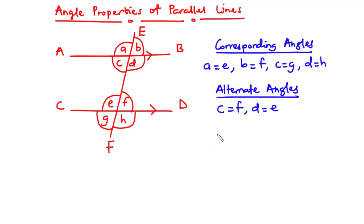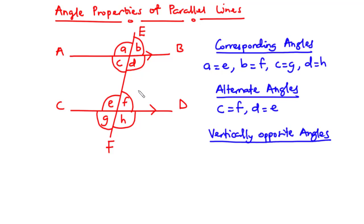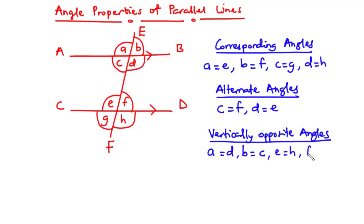For vertically opposite angles, when two straight lines intersect at a point, four angles are created. The angles that are vertically opposite to each other are equal. Considering lines AB and EF at the point of intersection: angle A equals angle D, and angle B equals angle C. For lines CD and EF: angle E equals angle H, and angle F equals angle J. So A equals D, B equals C, E equals H, and F equals G.